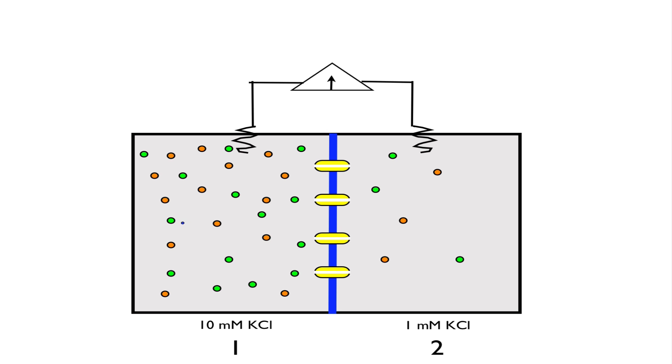To simplify our analysis, rather than looking at a real cell, we're going to look at a two-compartment model. We can see the three required pieces. We have the membrane here. We have an ion channel that allows for the passage of potassium. And we have a difference in concentration of ions between the compartments. In compartment one, we have 10 millimolar potassium chloride.